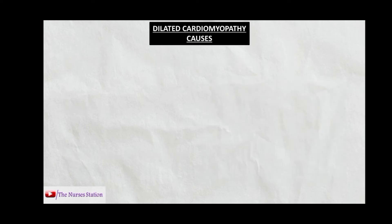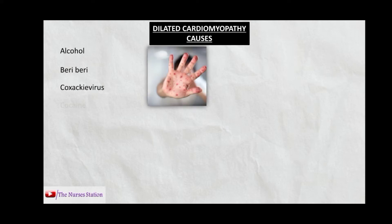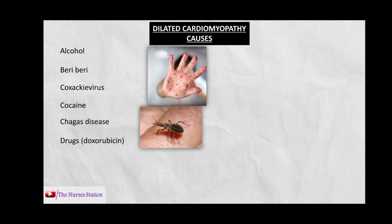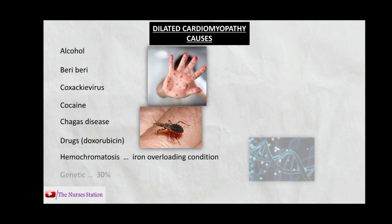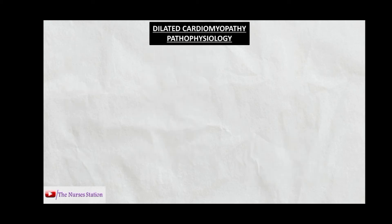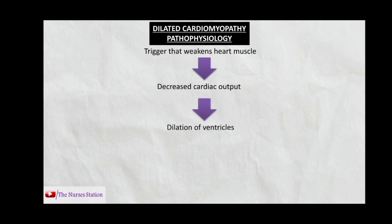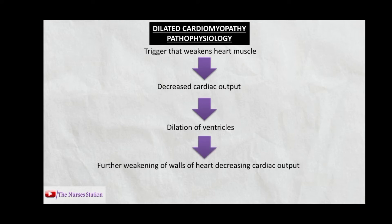The causes of dilated cardiomyopathy include alcohol, beriberi, Coxsackie virus, cocaine, Chagas disease, drugs like doxorubicin, hemochromatosis (an iron overloading condition), and in 30% of cases the cause is genetic. The pathophysiology: triggers weaken the heart muscle, decreasing the myocardium's ability to contract, which decreases cardiac output and causes dilation of the ventricles. This dilation further weakens the walls of the heart, decreasing cardiac output further.